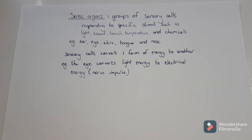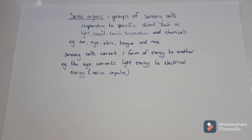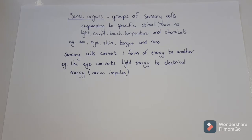Your sense organs are any group of sensory cells that respond to specific stimuli such as light, sound, touch, temperature, and chemicals. Your sense organs include your ears, eyes, skin, tongue, and nose. A sensory cell will convert one form of energy into another — for example, mechanical, chemical, or light energy — and those are all converted into the electrical energy of the nervous system, which is then interpreted by the brain.